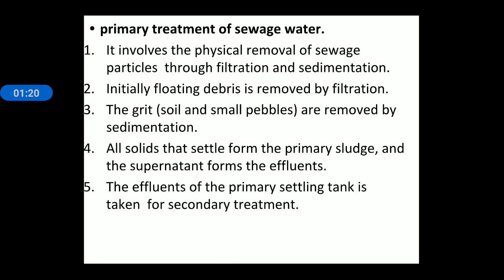Sewage treatment follows different steps for filtration and purification. The first step is known as primary treatment. Primary treatment includes two physical processes: filtration and sedimentation. In the filtration step, floating particles and floating debris are removed by a simple filtration system. Soil particles and small pebbles and stones are removed by the sedimentation process.